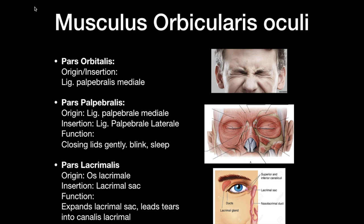The next muscle is musculus orbicularis oculi. This muscle surrounds the orbital opening and has three parts: pars orbitalis, pars palpebralis, and pars lacrimalis. Pars orbitalis originates at the medial margin, at the ligamentum palpebrale mediale, and also inserts at the ligamentum palpebrale mediale. The function of this muscle is to close the eye tightly, drawing the skin around the eye towards the center.